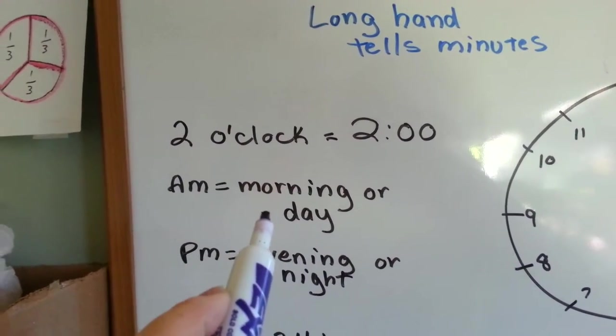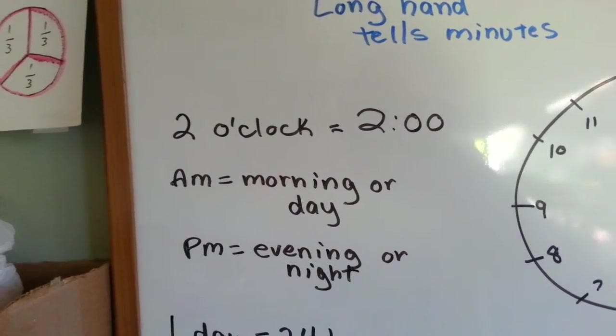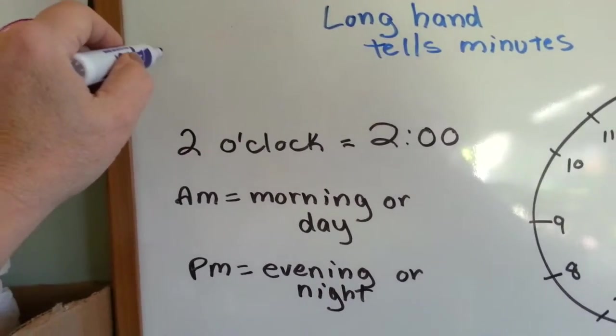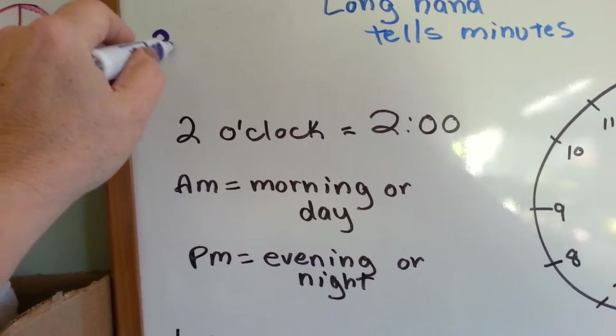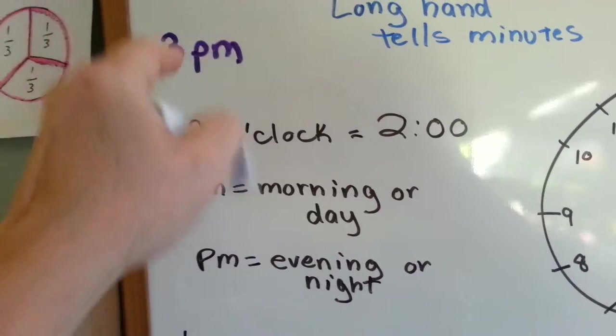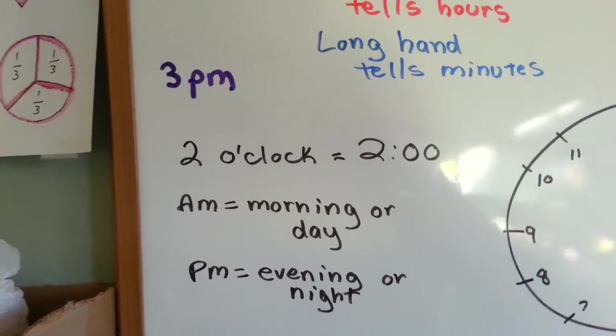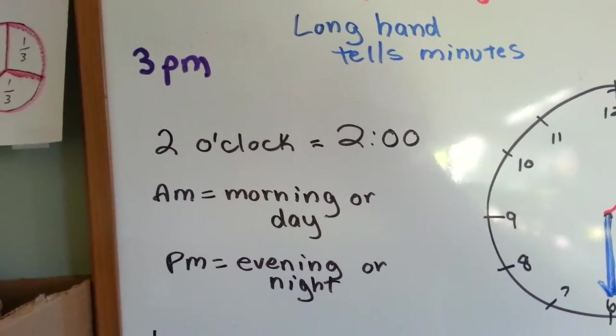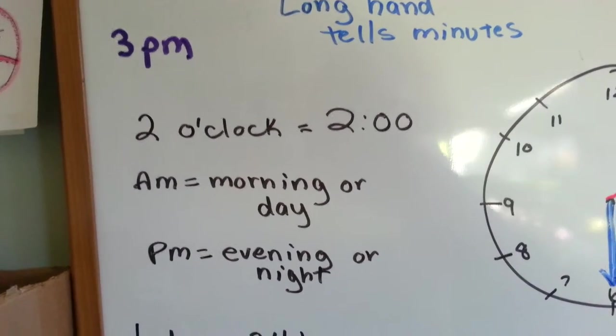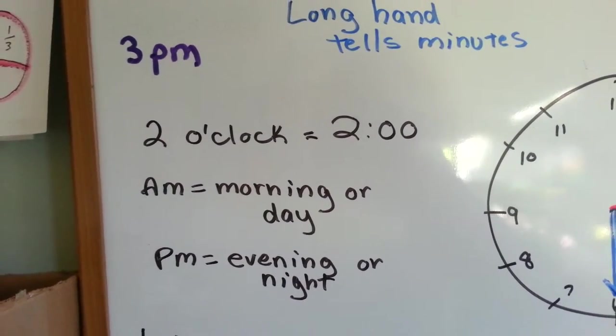A.M. means morning or day, and P.M. means evening or night. So you might see someone say it's 3 P.M. - that means it's 3 in the afternoon. If it was 3 A.M., it would be in the middle of your sleeping, in the really wee hours of the morning.